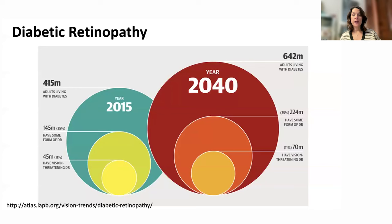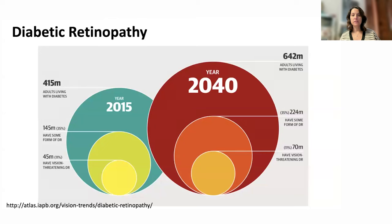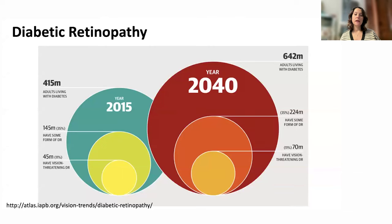The numbers for diabetic retinopathy are also going to increase. About 35% of those diabetic people will develop some degree of diabetic retinopathy, and about 11% will develop sight-threatening conditions. The problem is that those without signs are not going to show up early — only patients with vision complaints tend to seek care.